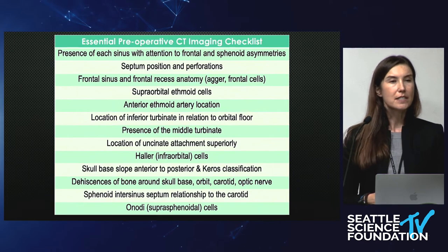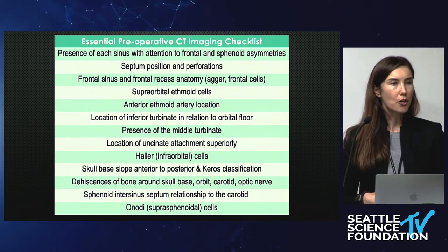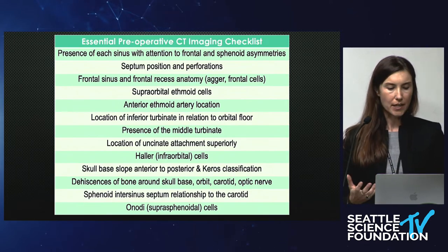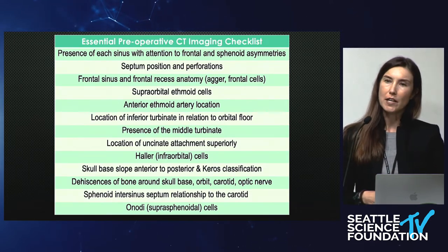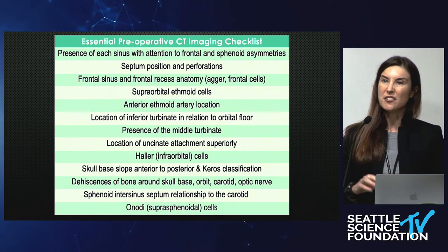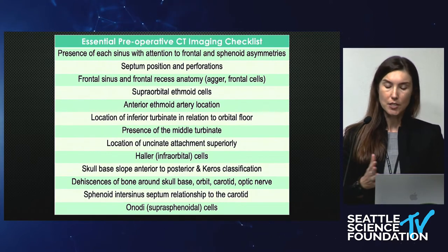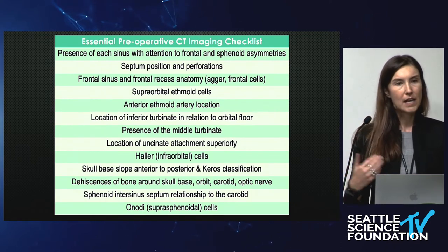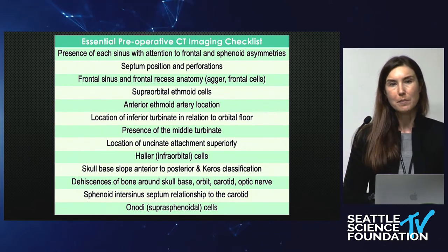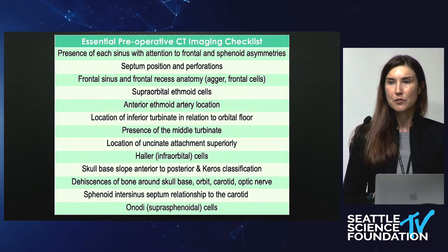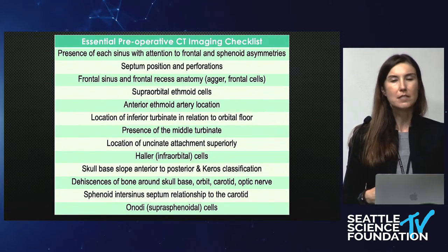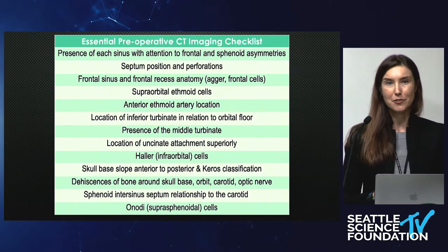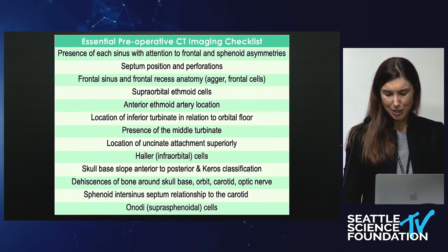Then you're going to be looking for dehiscences of bone in all of the different areas. You also want to look at your sphenoid — the intersinus septum: does it go directly to the carotid? And any Onodi cells that might be present. So this is the checklist that I use when I go through, and the checklist I expect all of my trainees to use.